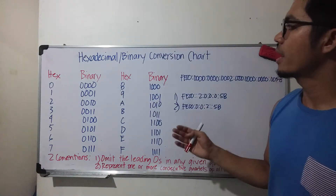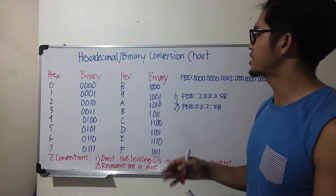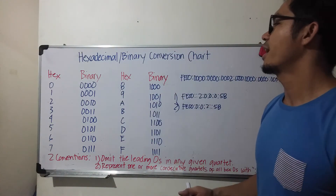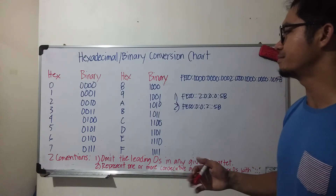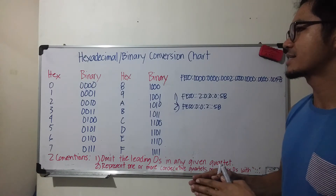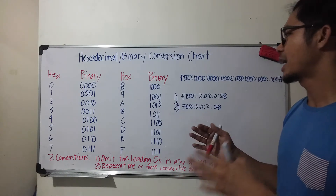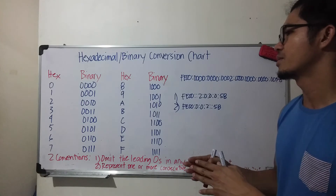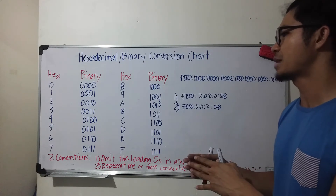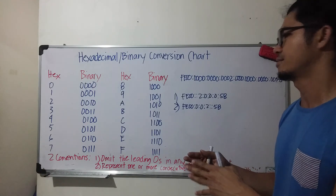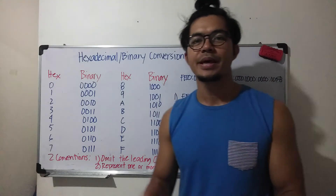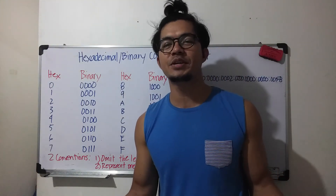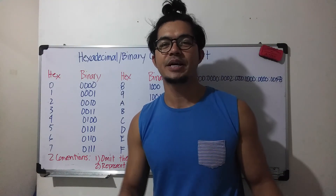That's it for the hexadecimal and binary conversion chart and how you write an IPv6 address into a short version. Thanks for watching, bye.